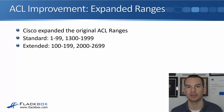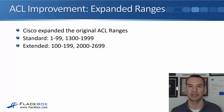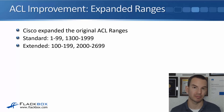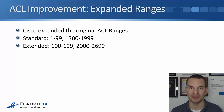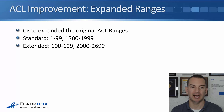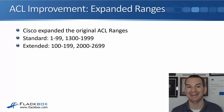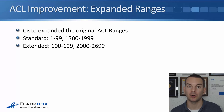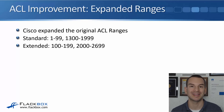Cisco improved this later on. The original implementation had standard from 1 to 99 and extended from 100 to 199. It's not likely, but in really large environments like service providers with lots of sub-interfaces, they could run out of ACL numbers. So Cisco expanded the range — standard now also includes 1,300 to 1,999, and extended also includes 2,000 to 2,699.